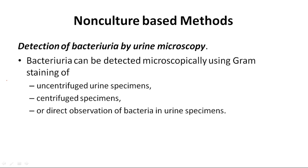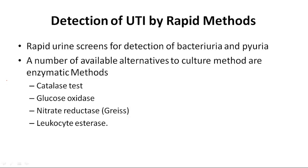Apart from culture-based techniques, there are non-culture based methods for detection of bacteriuria. The microscopic method allows bacteria to be detected using a Gram stain of either an uncentrifuged or centrifuged urine sample, or by direct observation of bacteria in a urine specimen. There are also rapid urine screens for detection of bacteria and pus cells, and a number of commercially available non-culture based enzymatic methods, such as the catalase test, oxidase test, nitrate reductase test, and leukocyte esterase test.